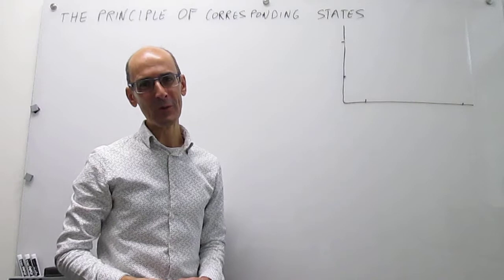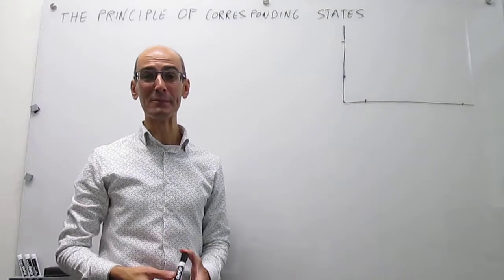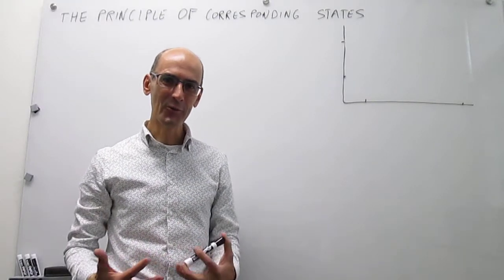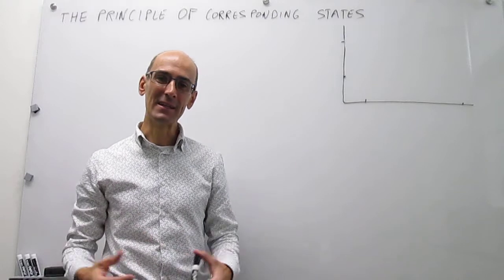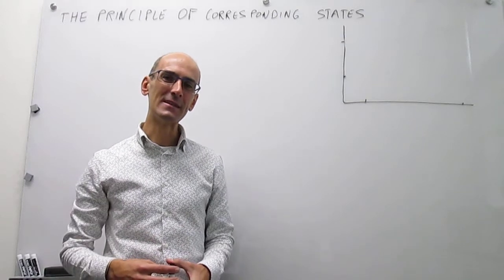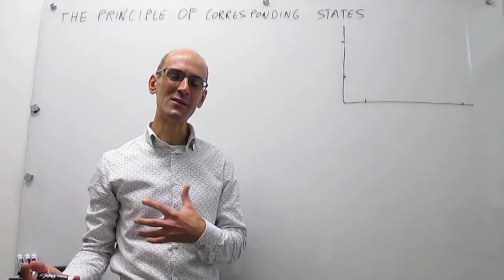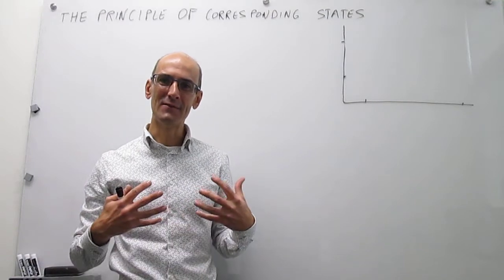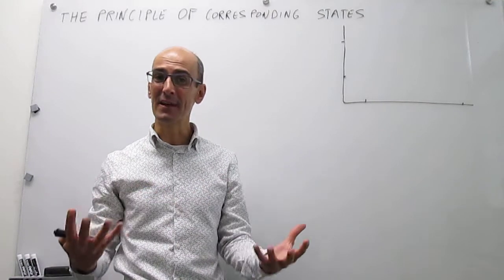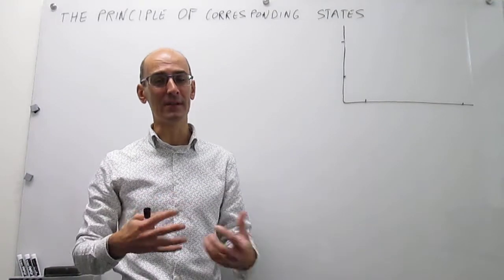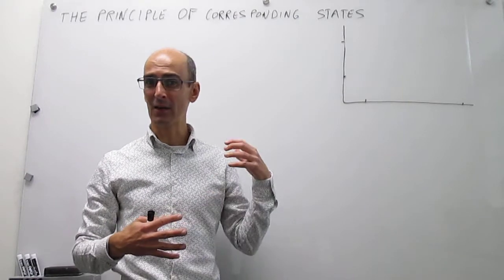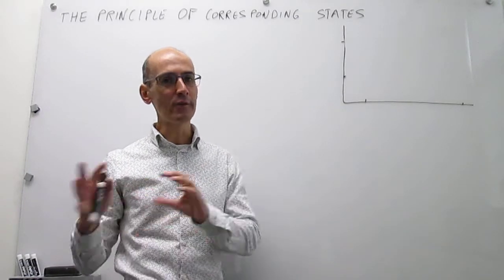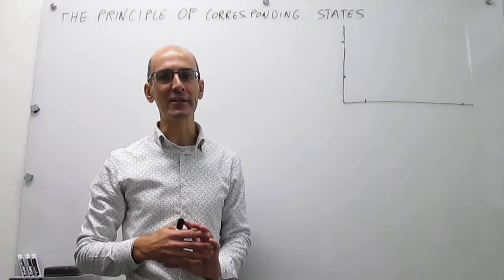In this video we review the principle of corresponding states. In our prior work with equations of state we have seen that whenever you have deviations from ideality, different gases interact differently, so that things like compression factors and critical points are different for a variety of gases.